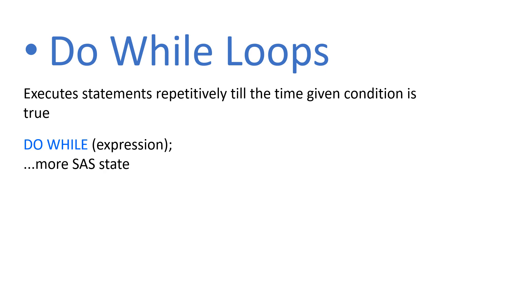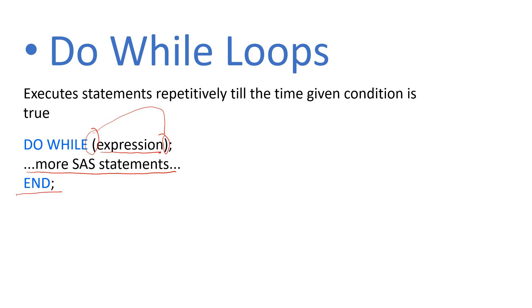Let's have a look at the syntax. The syntax structure starts from DO WHILE, with a parenthesis operator which is quite important and mandatory. Within this parenthesis you need to provide the expression — an expression can be any condition that is acceptable in SAS. Then you provide the operation which you want the DO WHILE loop to perform, and then you end the statement.